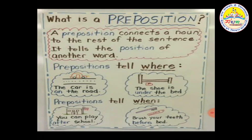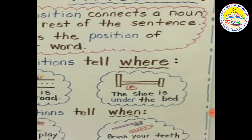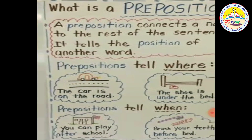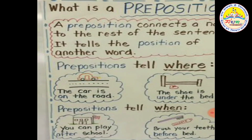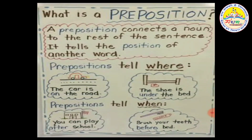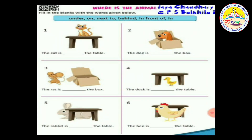Preposition tells where something is. For example: the car is on the road; the shoe is under the bed. Preposition also tells when — time. You can play after school. Brush your teeth before bed. Preposition tells where and when — it tells location, position and time.